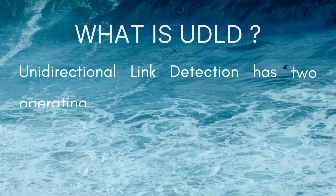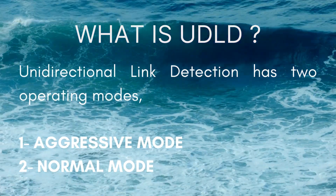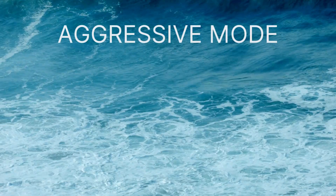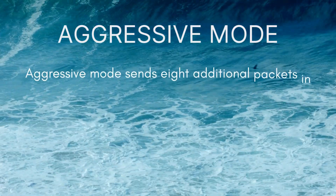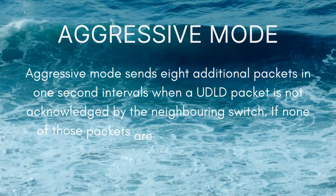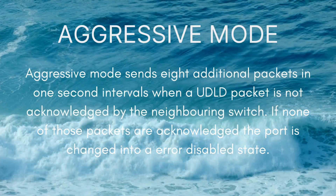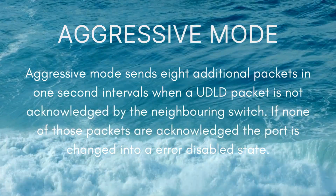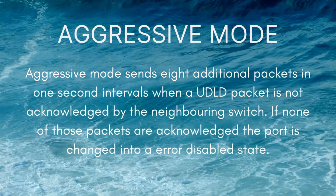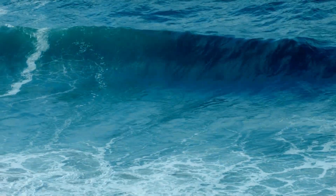Unidirectional Link Detection has two operating modes: Aggressive Mode and Normal Mode. Aggressive Mode sends eight additional packets in one-second intervals when a UDLD packet is not acknowledged by the neighboring switch. If none of those packets are acknowledged, the port is changed into an error-disabled state.